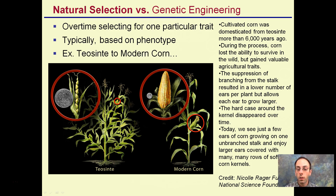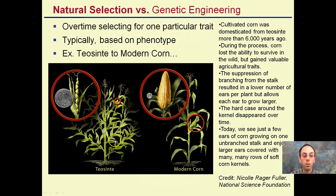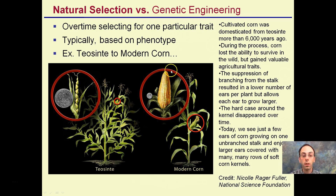Another example: over time, selecting for one particular trait, again typically based on phenotype. Modern corn comes from something called teosinte. Compared to a quarter, teosinte is a highly branched corn plant that produces very small, almost single-row seed ears. Through the process of natural selection, people have cultivated corn to grow one main central stalk and to produce large ears of corn — you can see here the comparison of modern corn versus teosinte, the ancestor of corn.